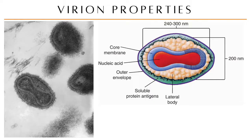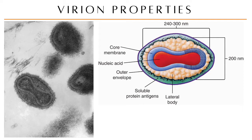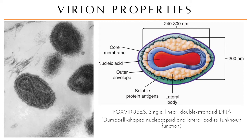Looking at the virion properties of these viruses: the electron microscopy image shows pox viruses are composed of a single linear double-stranded DNA. They are known for having a dumbbell-shaped nucleocapsid with lateral bodies of still unknown function. The size ranges from 220 to 450 nanometers — some are 120 nm but the maximum is around 450 nm — which is why they are regarded as the largest animal viruses.